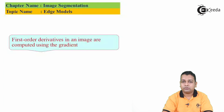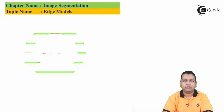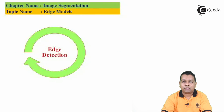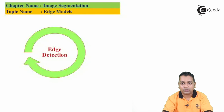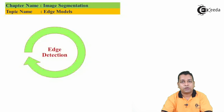First-order derivatives in an image are computed using the gradient. Second-order derivatives are obtained using the Laplacian. With the understanding of gradient and Laplacian covered earlier, we shall proceed to understand what exactly edge detection is. After the detection of isolated points and line detection, we shall be covering edge detection in the next lecture.